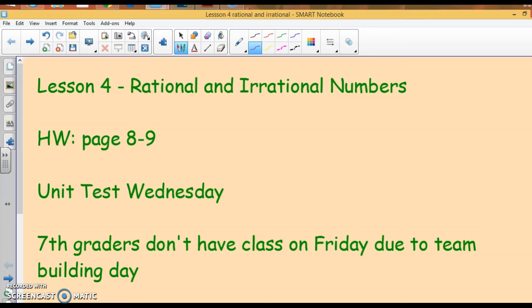Okay, this lesson is the first unit, Lesson 4 in Advanced Algebra: Rational and Irrational Numbers. The homework that goes with it is pages 8 and 9 in the homework packet, and we're having a unit test on Wednesday. Now this is for this year, 2016-2017, but if you are looking at this next year, that will be different. You'll have to check in class. And we don't have class on Friday.